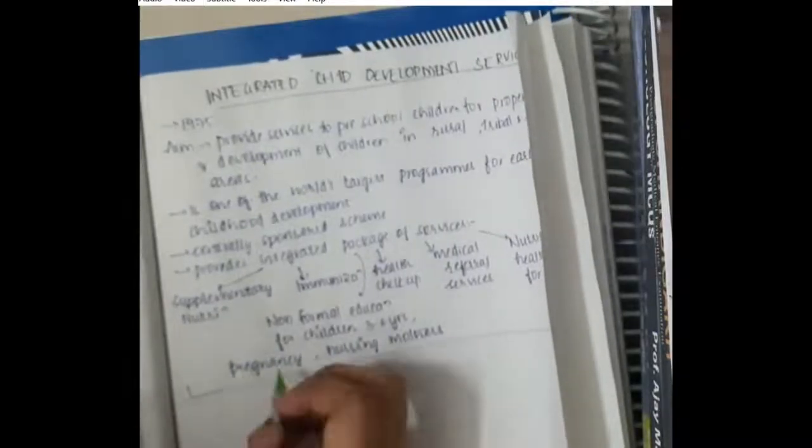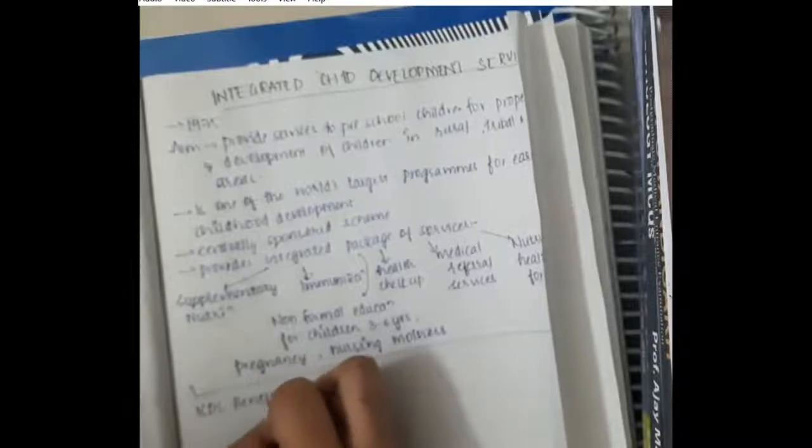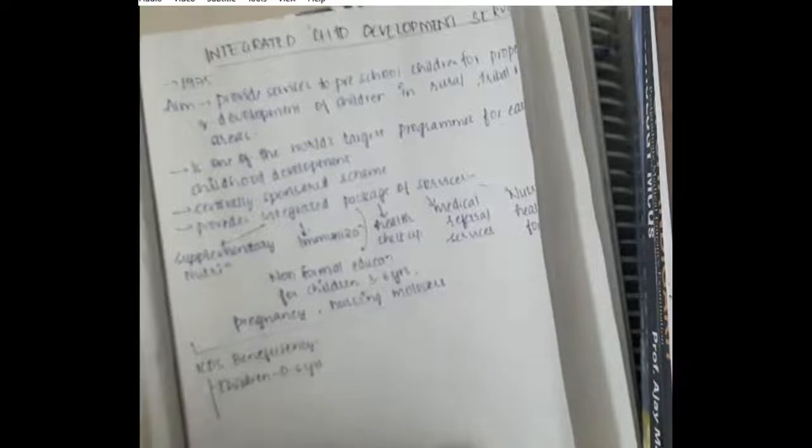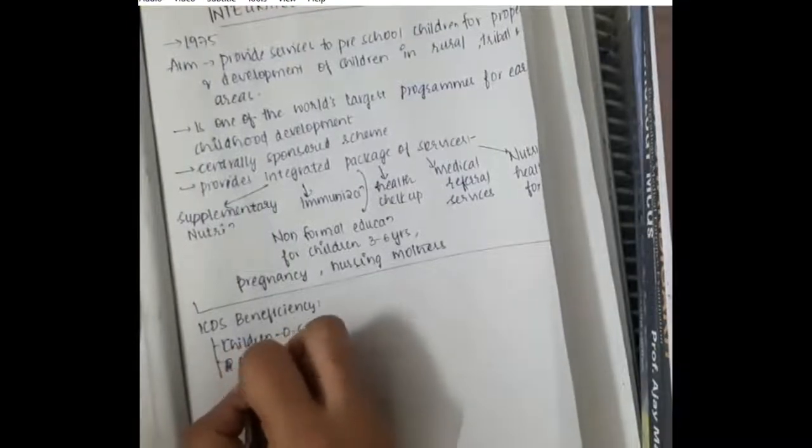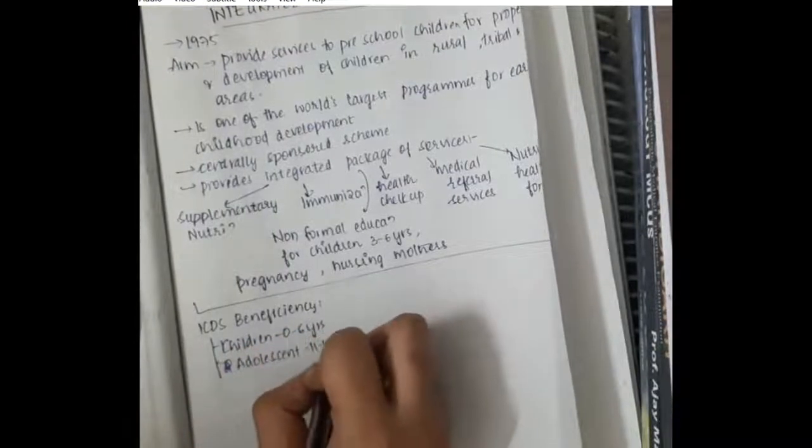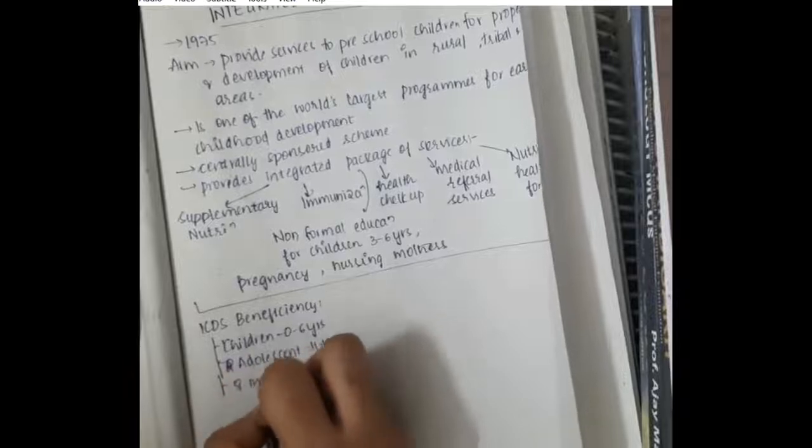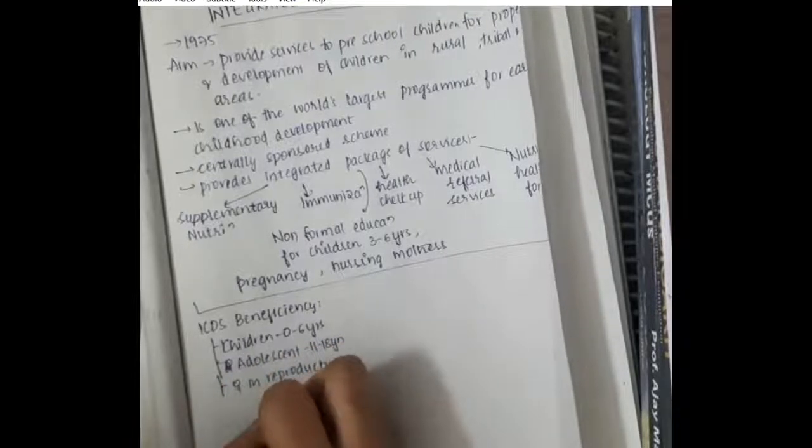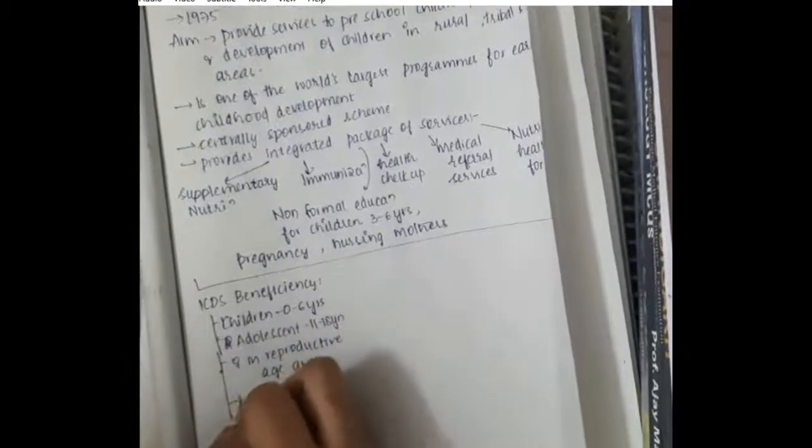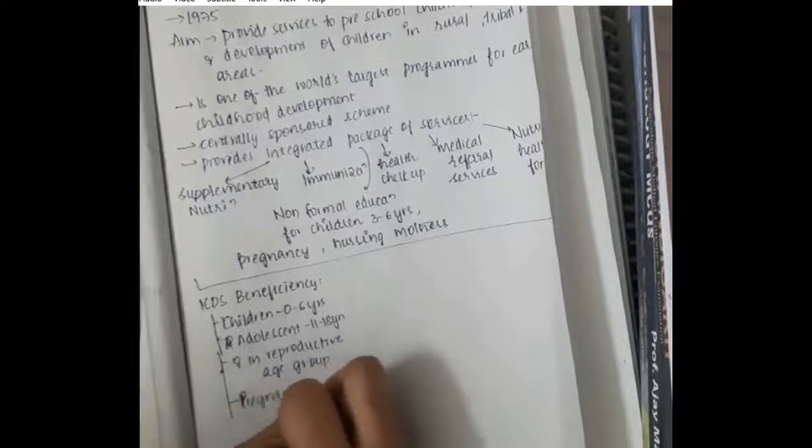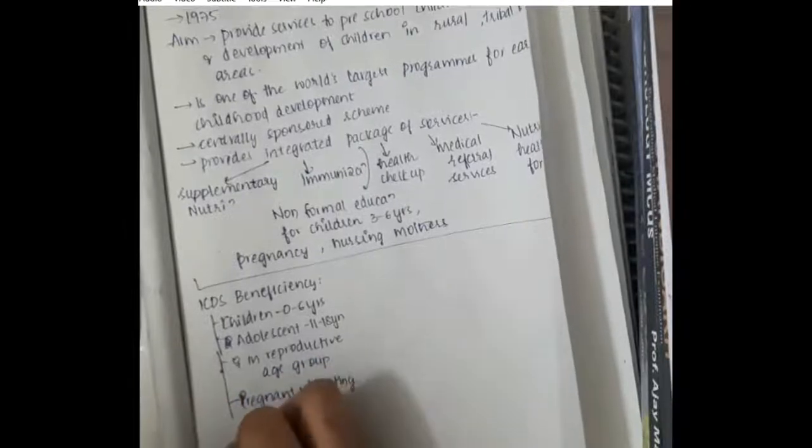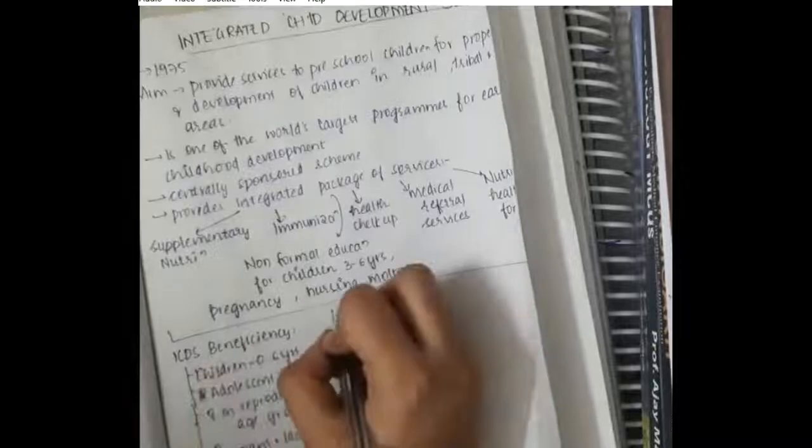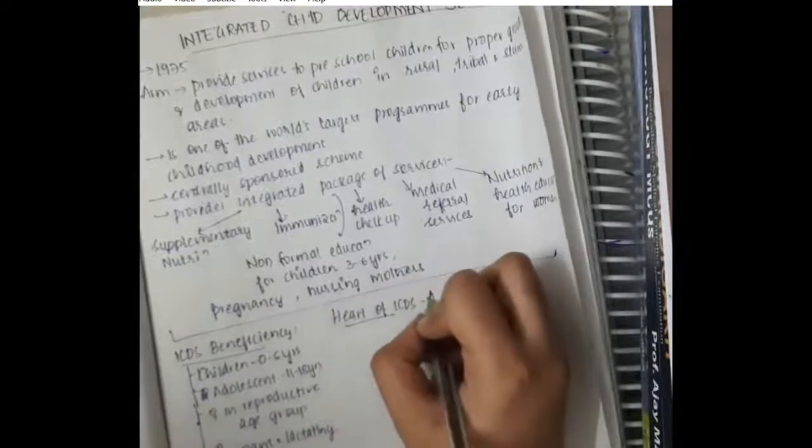ICDS beneficiaries include children from 0 to 6 years of age, that is preschool children. It also gives importance to adolescents aged 11 to 18 years, females of reproductive age group, and pregnant and lactating women.